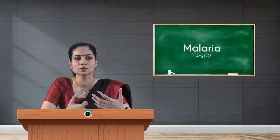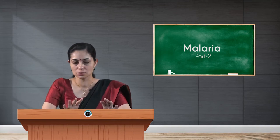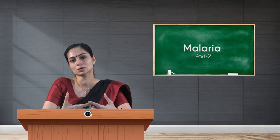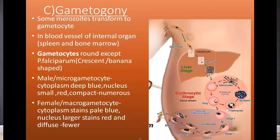Gametogany happens in the blood vessels of internal organs, for example the spleen and bone marrow. These gametocytes are round, except in Plasmodium falciparum where they are crescent or banana-shaped. There are two types: male or micro-gametocyte and female or macro-gametocyte. In male micro-gametocytes, the cytoplasm stains deep blue and the nucleus is red but small and compact. In female macro-gametocytes, the cytoplasm stains pale blue and the nucleus is red but larger and diffused.